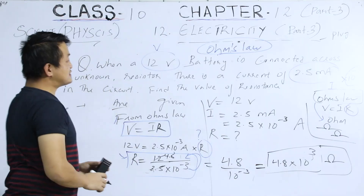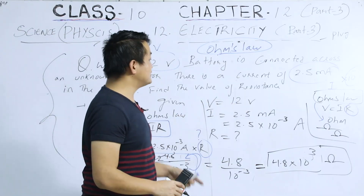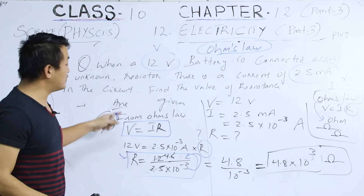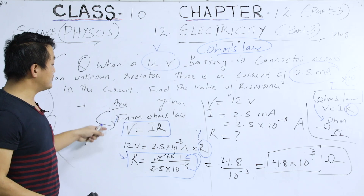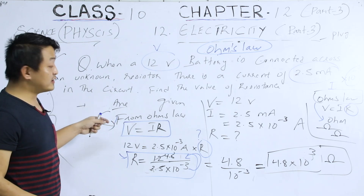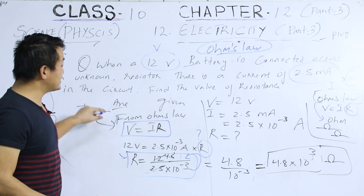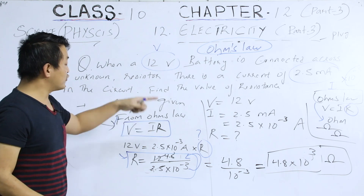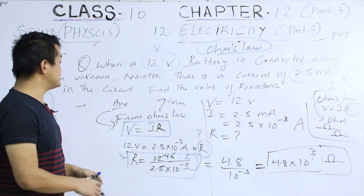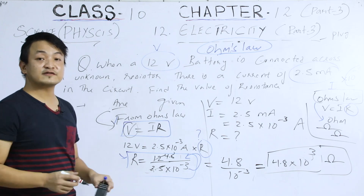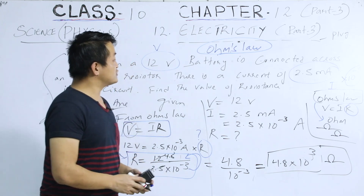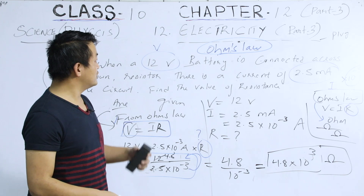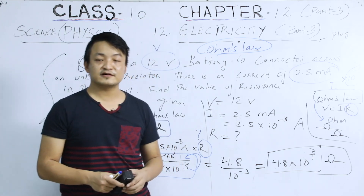In this way we can solve any numerical using these relations derived from Ohm's Law, which states that the electric current flowing through a conductor is directly proportional to the potential difference across its ends. That is all for today. We'll continue with another interesting topic in the next class. Thank you.